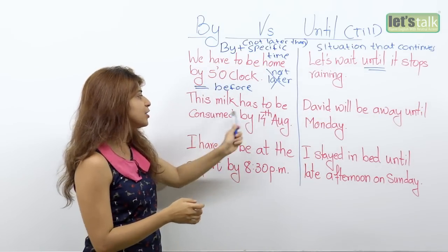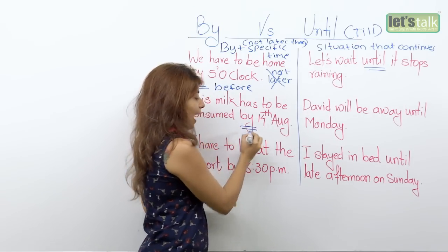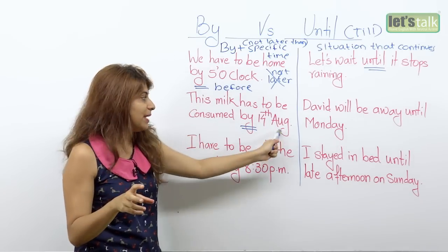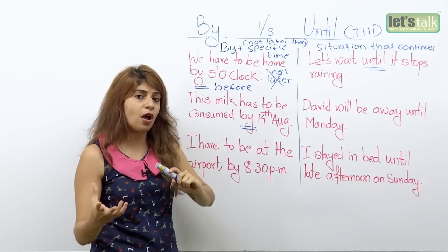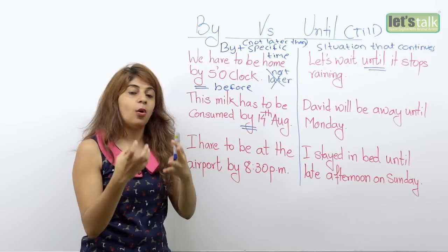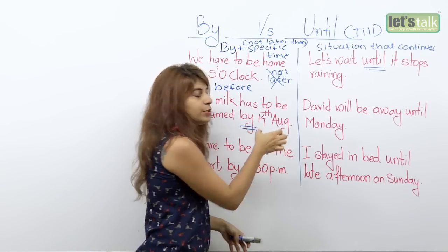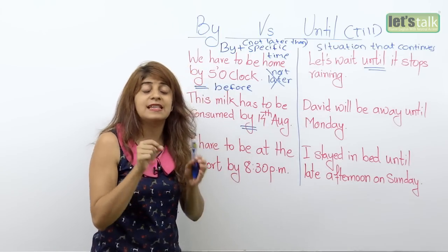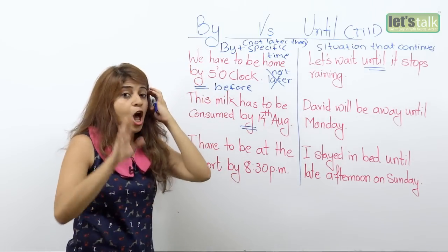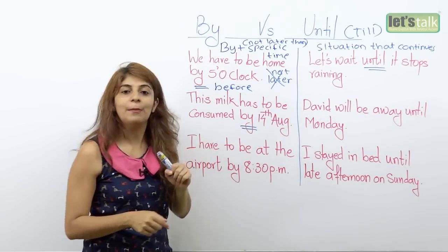Next example: 'This milk has to be consumed by 14th of August.' You use 'by' because maybe the expiry date is 14th of August. You either have to consume the milk before 14th of August, or on 14th of August itself — that is the last day. Not later than 14th of August, and that's why you use the word 'by'.